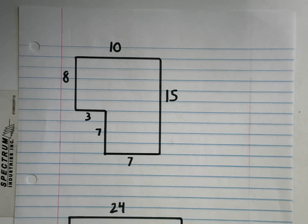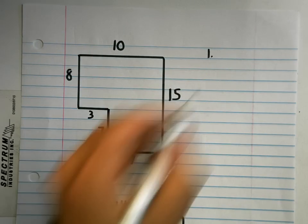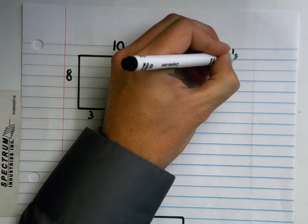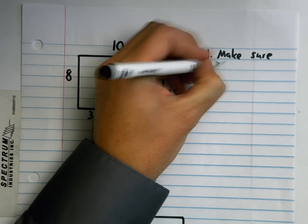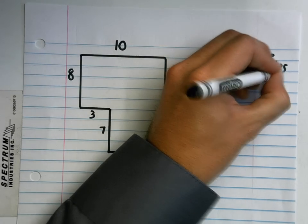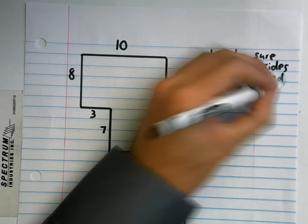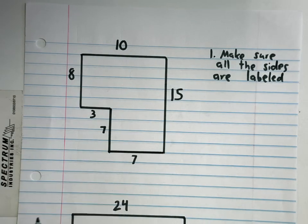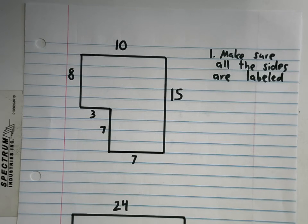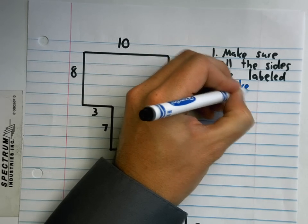Here's what I'm going to do. Step one is going to make sure all the sides are labeled. Make sure all the sides are labeled. Are all these sides labeled? Do I know how long every side is? Step two. Guess what? I'm going to make rectangles. Watch. Step two. Make rectangles.